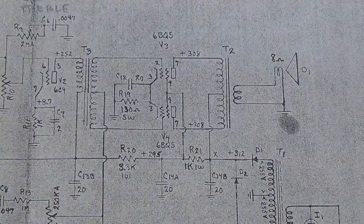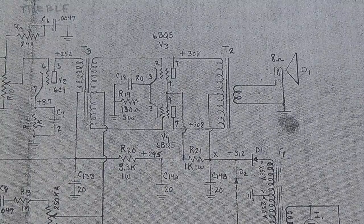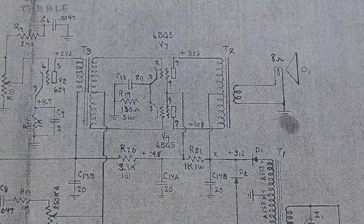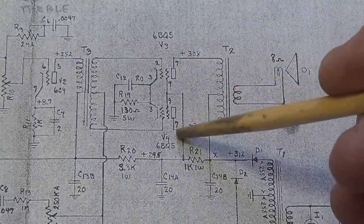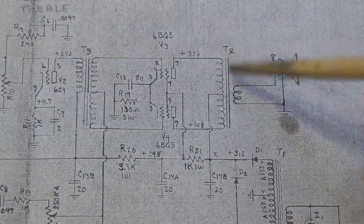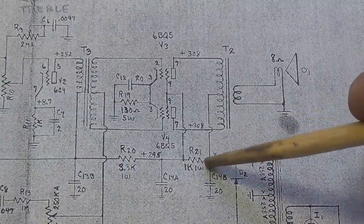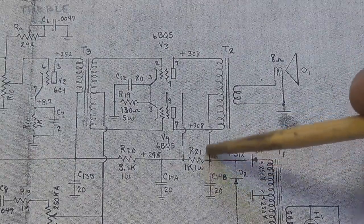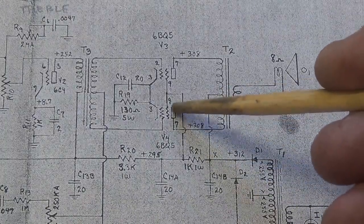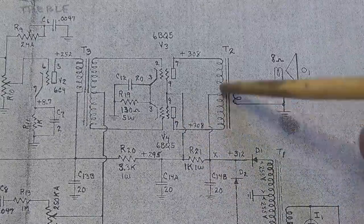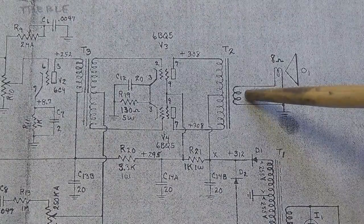Here is pin 5 of the 6C4, and it goes out through the chassis to that small interstage push-pull phase inverter transformer, and then the signal returns to our two 6BQ5s. Here is our 20 microfarad bypass cap and our 130-ohm biasing resistor, both going to ground through this purple wire.